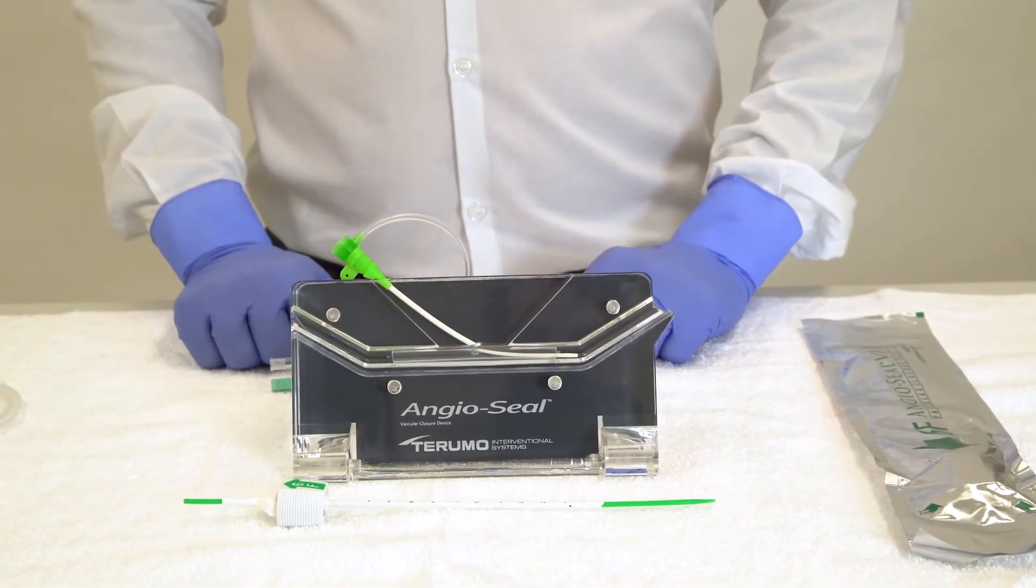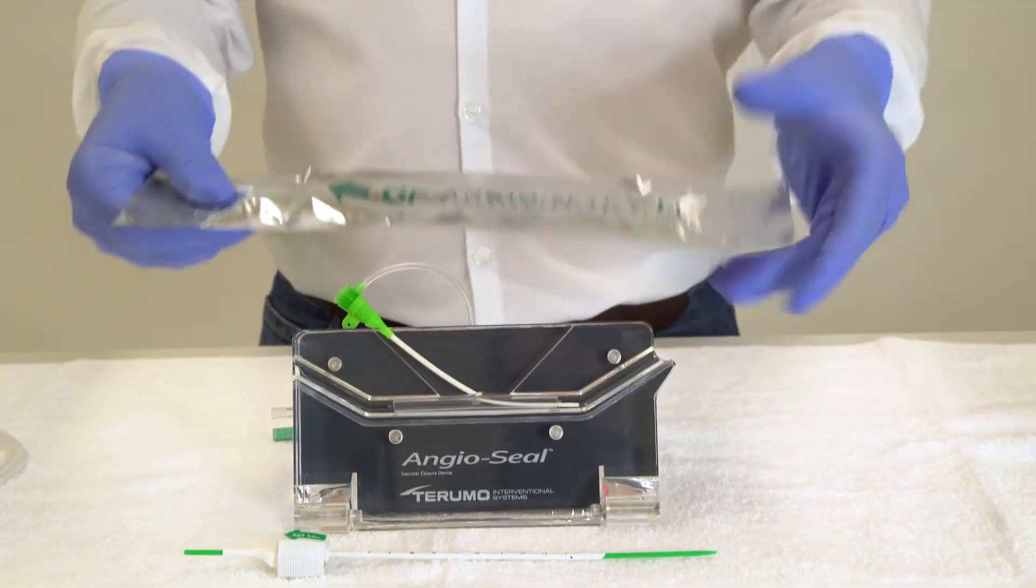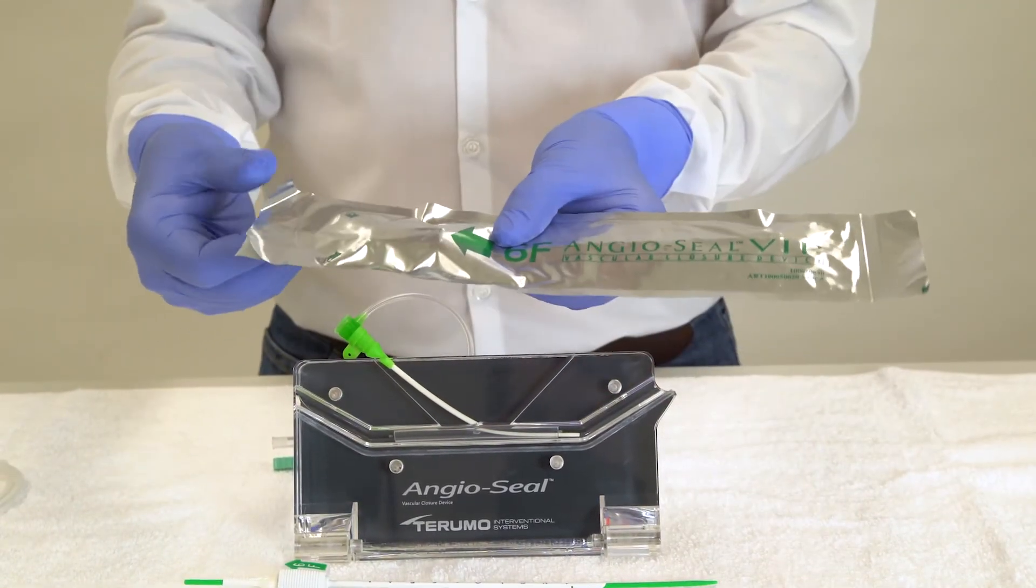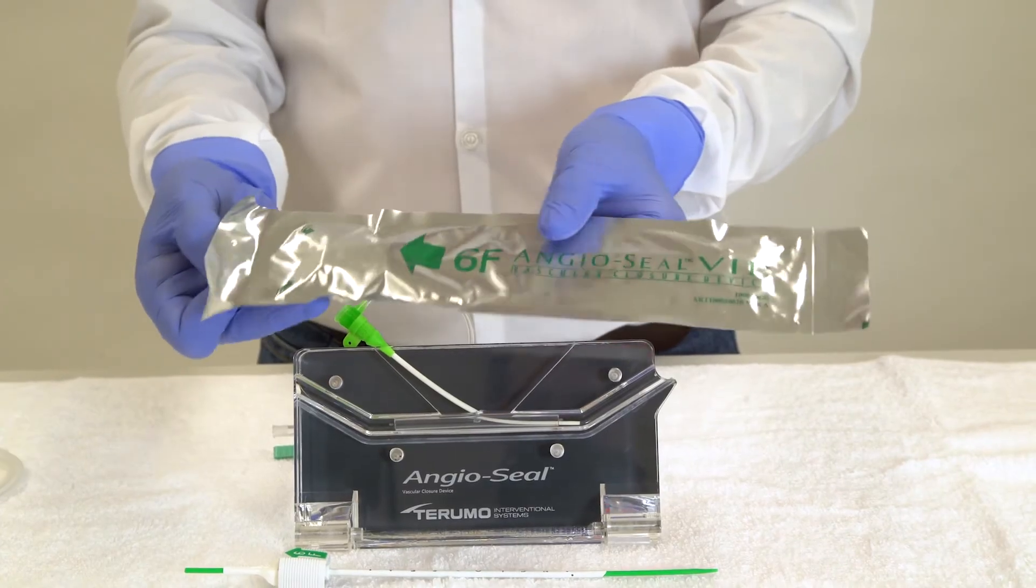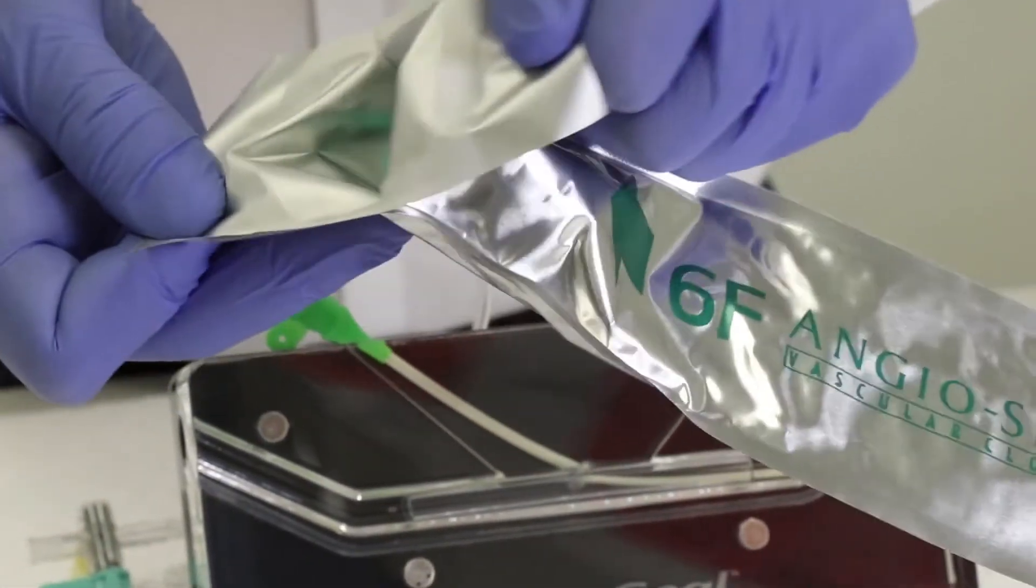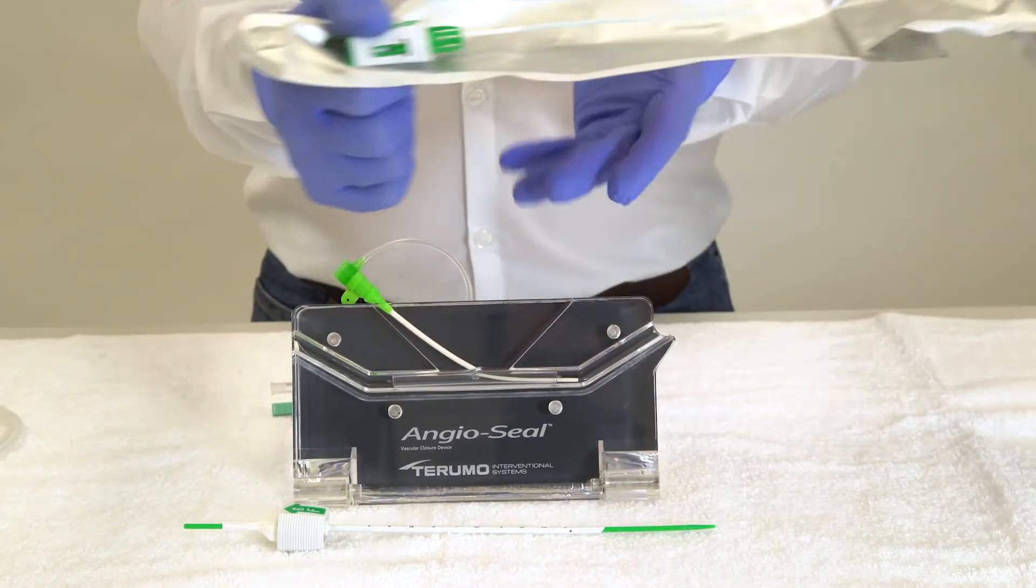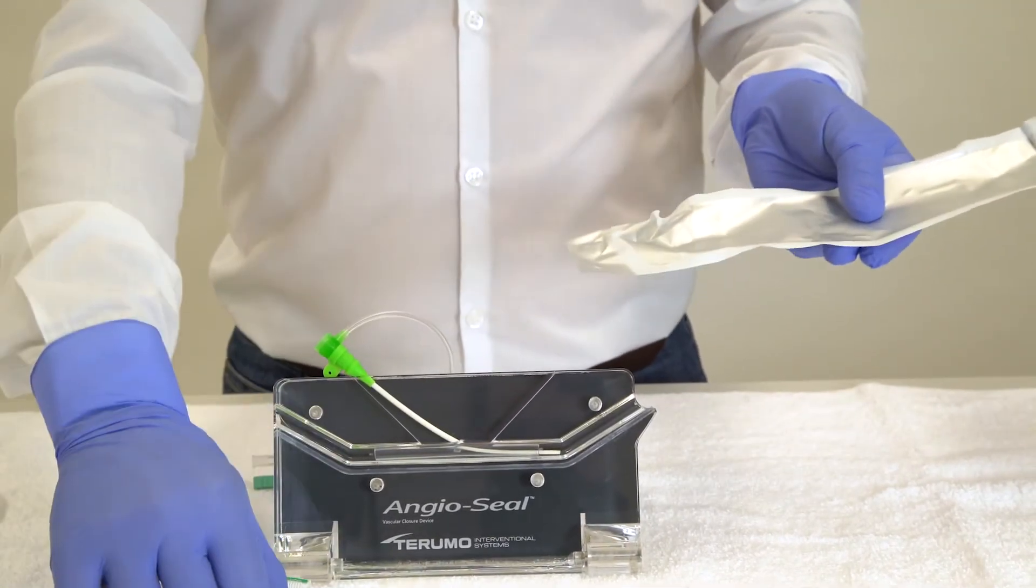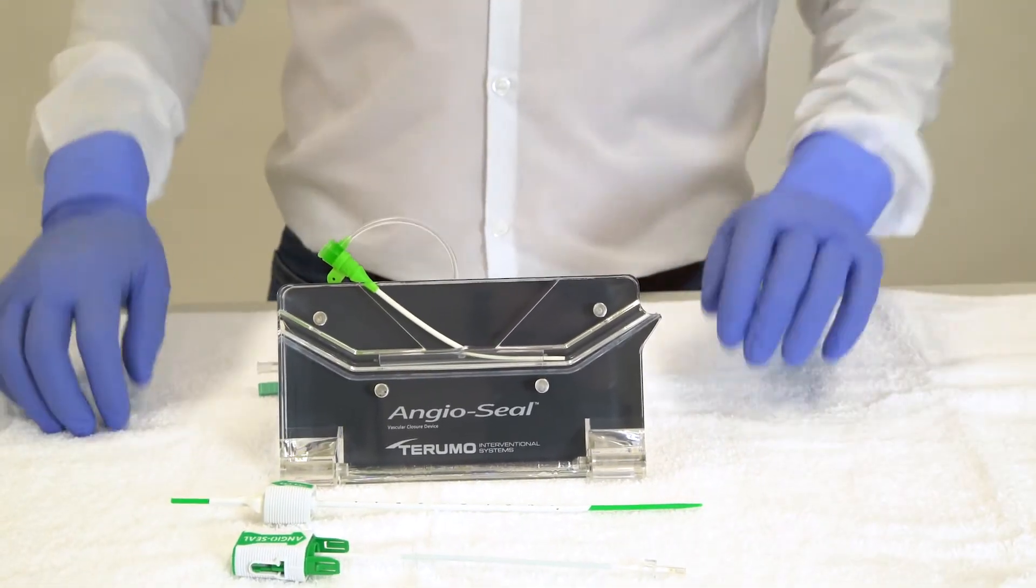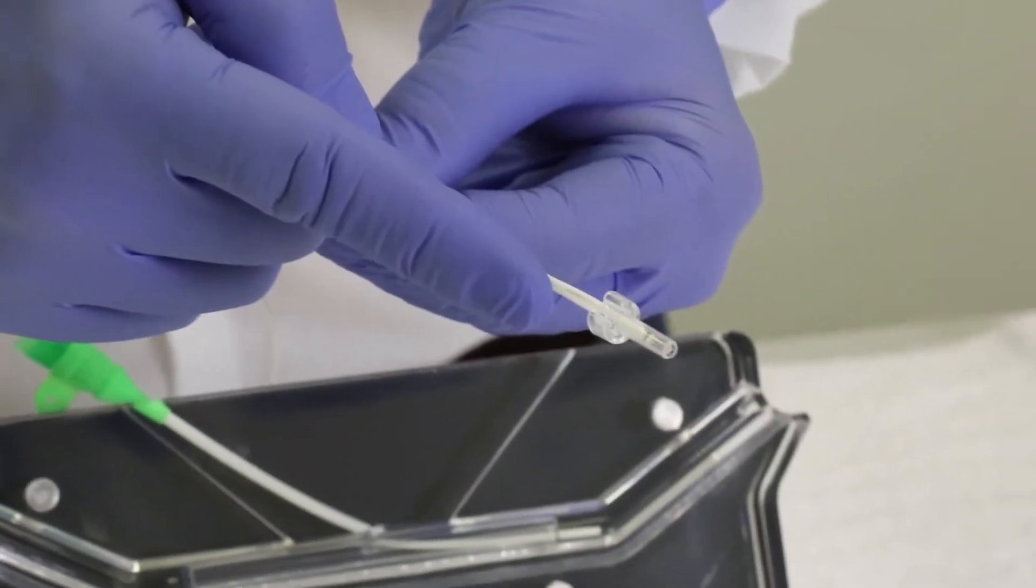The device comes in a foil patch—open it first so that it's ready. The patch has two arrows at one end indicating where to open it.